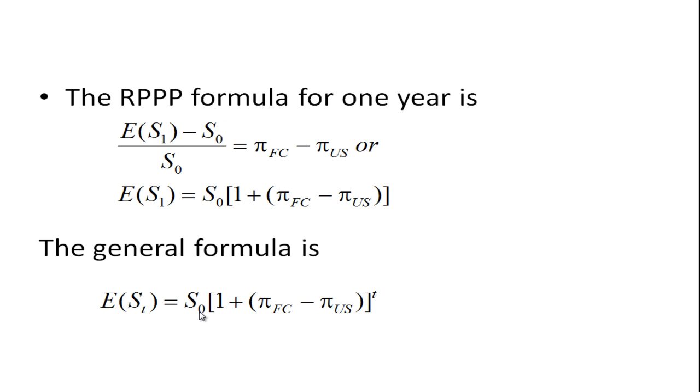The relative purchasing power parity formula for one year is: the expected spot exchange rate at time period one minus the current spot exchange rate divided by the current spot exchange rate. This is a percentage change, and it equals the difference between the two inflation rates.